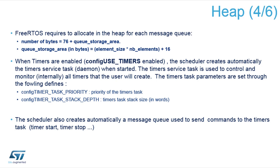The local variables of the callback function called in the timer task can overwrite data from other tasks or objects — for example, overwriting a queue structure or a mutex, destroying it. This is very hard to debug. You should check the list of tasks, look at their stack usage, and if the timer task stack is completely exhausted you need to increase its stack size. Additionally you can adjust the priority of the timer task: high priority for precise timing, or idle/low priority if you don't want to disturb other code.